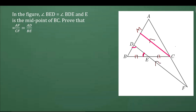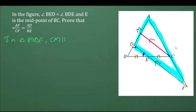Now we apply BPT in triangle ADF. Since CM is parallel to DF, by BPT we can say that AC over CF is equal to AM over DM. We apply this because we can see AF and CF in the figure.